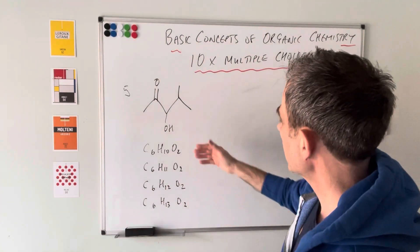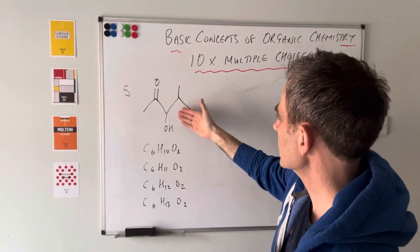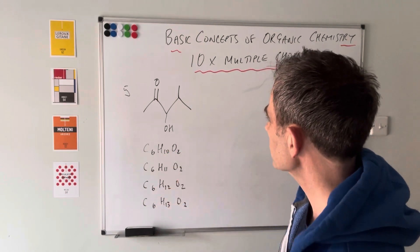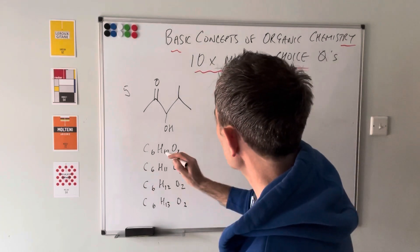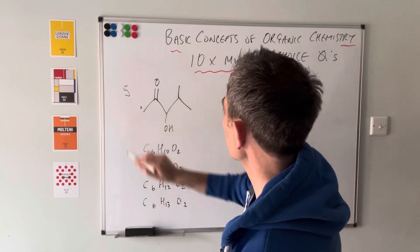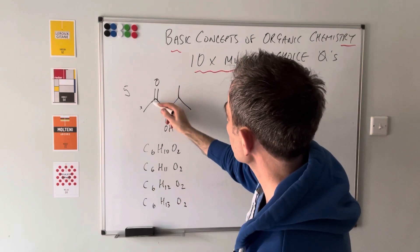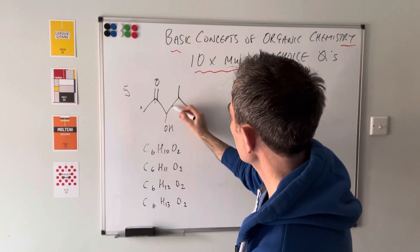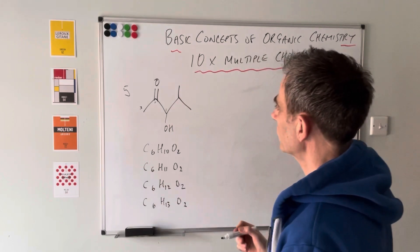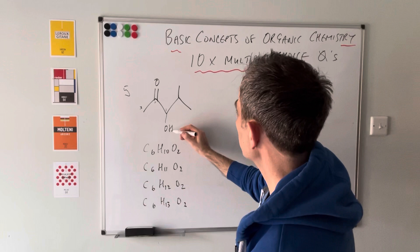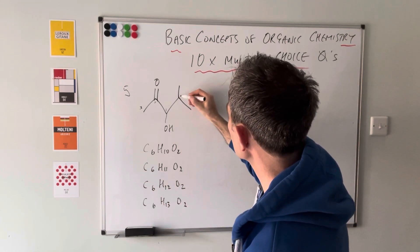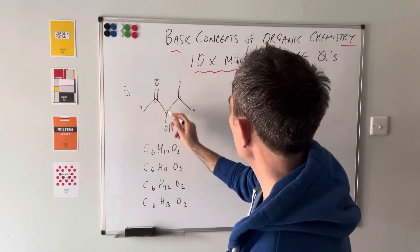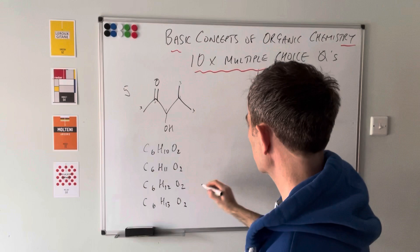Question five: we need the molecular formula for a given skeletal formula. All four answer options have 6 carbons and 2 oxygens, so we just need to count the hydrogens. Going carbon by carbon: 3 hydrogens on the first, 0 on the next (four bonds already made including a double bond), 1 on the next, 1 visible hydrogen shown, then 1 more, and 3 each on the final two CH3 groups. Adding them up: 3+0+1+1+1+3+3 = 12 hydrogens. The answer is C6H12O2.